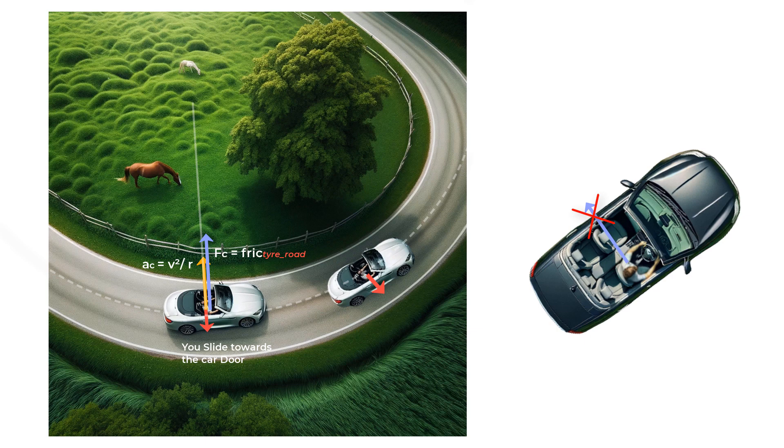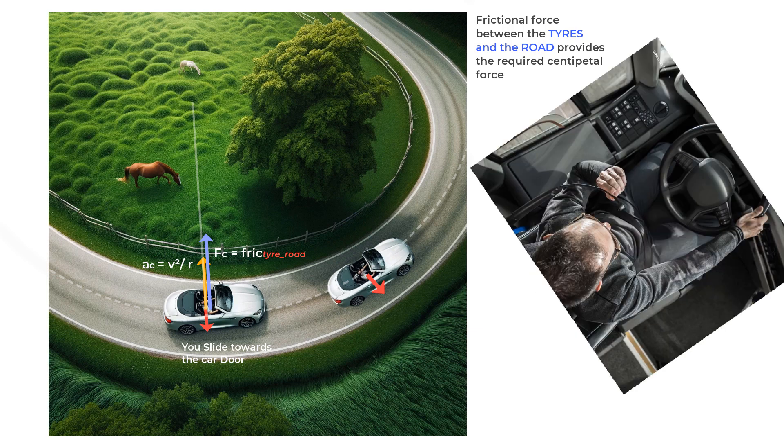So, while the friction force between the tires and the car was providing the required centripetal force to take the car in circular motion, this force was not available to you because you were sitting on the seat of the car. But then, lucky for you, there was a friction force between you and the seat of the car which could have provided the centripetal acceleration. However, unfortunately, this friction force on you from the seat was not large enough to hold you and make you go in a circle with the car.